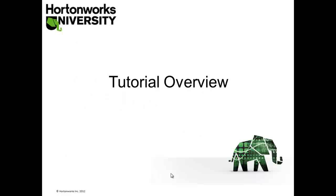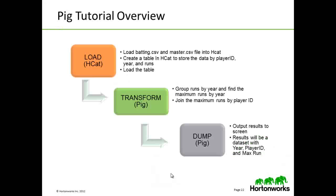As part of this online tutorial, we present a small exercise using baseball statistics. We use HCatalog to load both the batting.csv and the master.csv files, and create a table in HCatalog to store data by player ID, year, and runs. Using Pig, we group runs by year and find the maximum runs per year. We then join the maximum runs with player ID information, and dump the output to the screen — resulting in a data set with year, player ID, and max runs for that player.